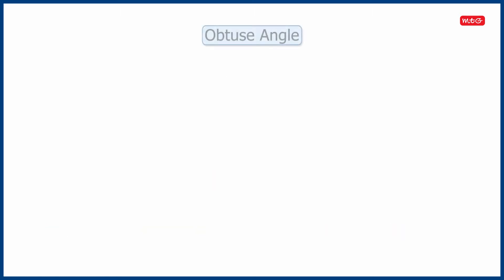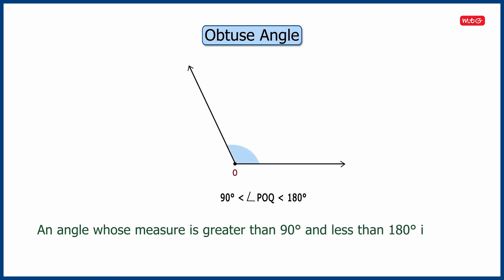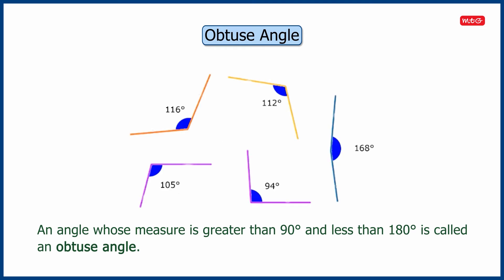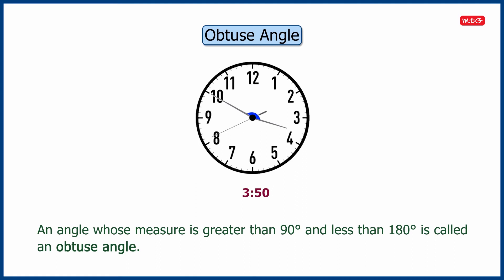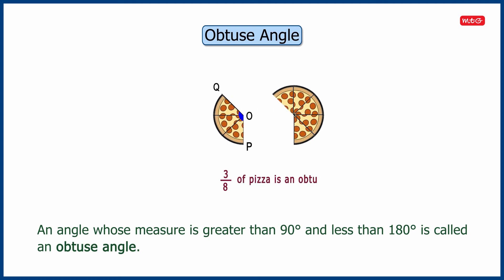Next, it is time to know about obtuse angle. An angle whose measure is greater than 90 degrees and less than 180 degrees is called an obtuse angle. All the angles shown here are obtuse angles. For example, clock showing 50 minutes past three, three by eight of a pizza, etc.